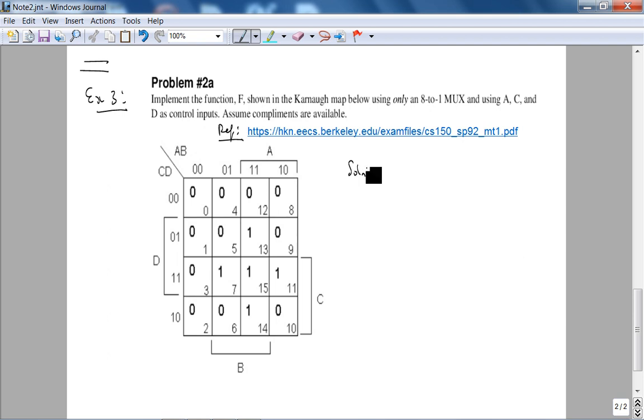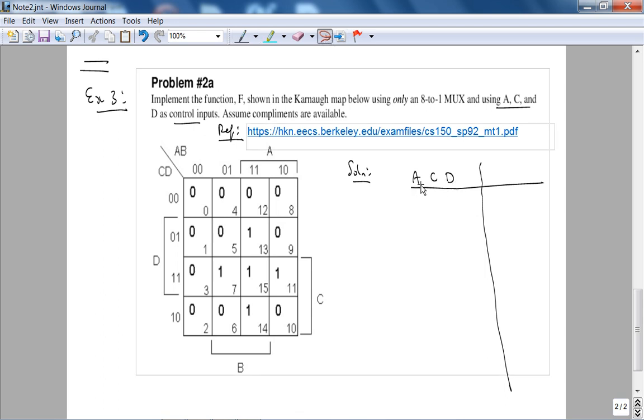The problem is we want to implement an 8-to-1 mux using three control inputs. It makes sense, you have three inputs that will give us eight possible choices. There are many ways to approach this problem. What I'm going to do is I'm going to actually write out the truth table, because it's much easier.